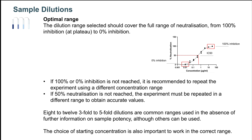Generally, between 8 and 12 three-fold to five-fold dilutions are common to cover a broad range of concentrations, although others can be used. The choice of the starting concentration is also very important, both to select the appropriate concentration range and to limit matrix interference.